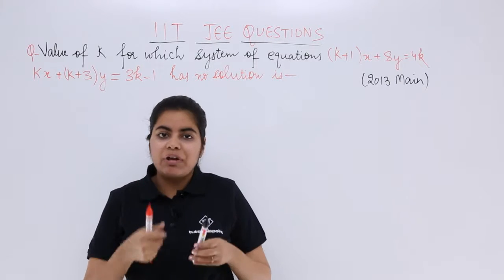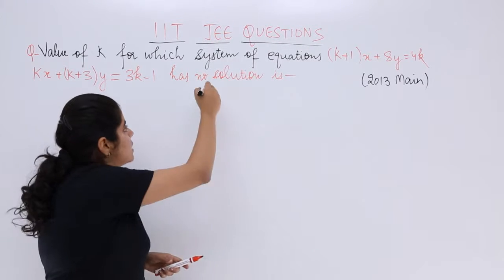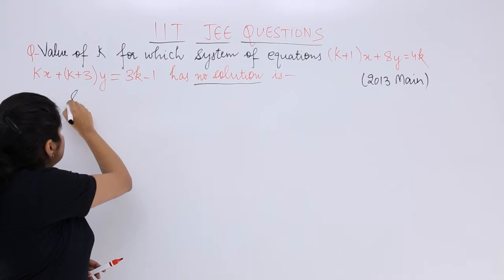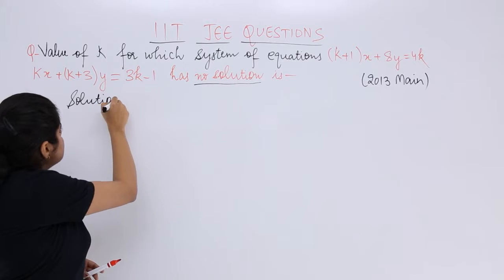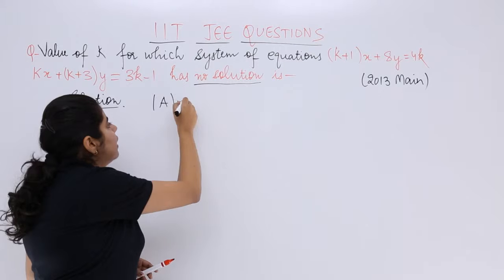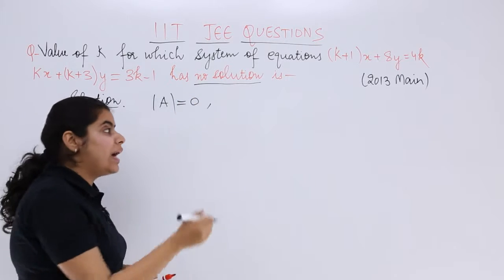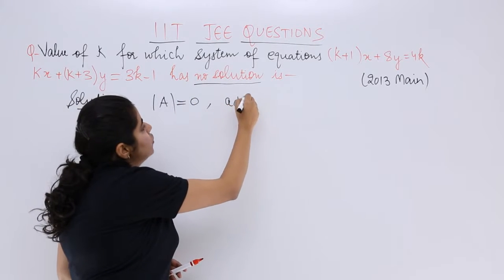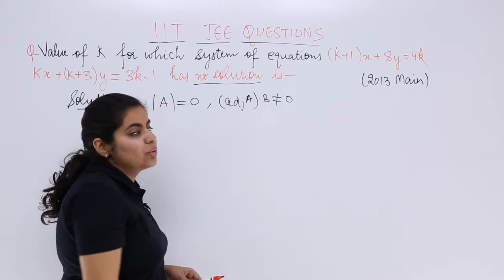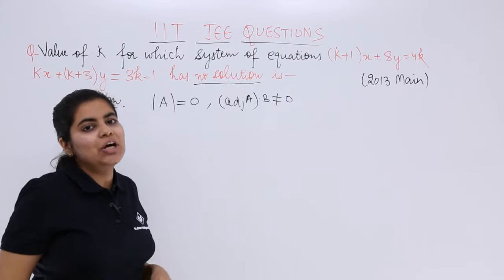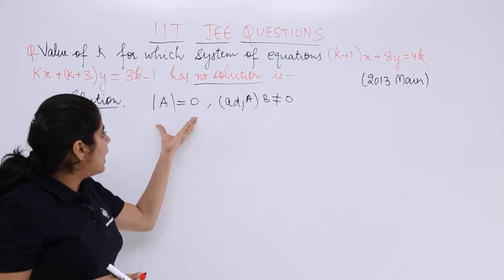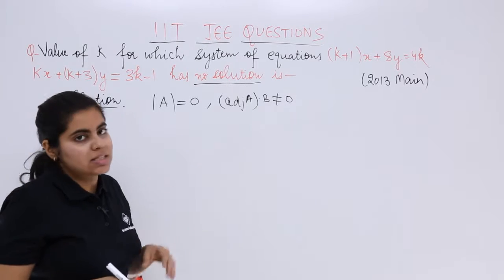Now when we deal with system of equations and we have no solution, what is the condition? You have to first calculate determinant of A. If determinant of A equals 0 and at the same time adjoint A multiplied by B is not equal to 0, then we get no solution to the given system of equations. My task is to find A and then this.